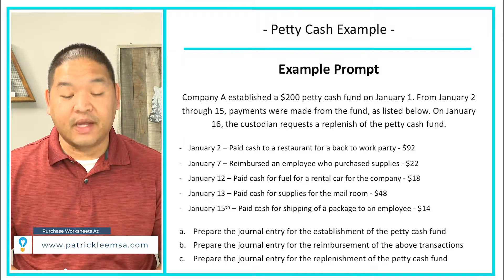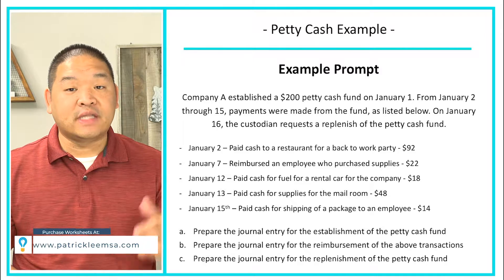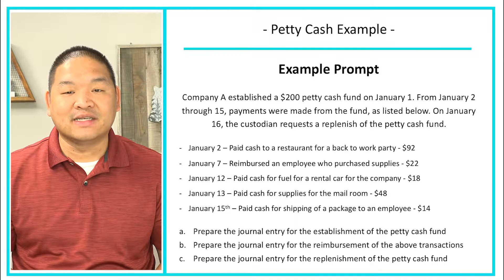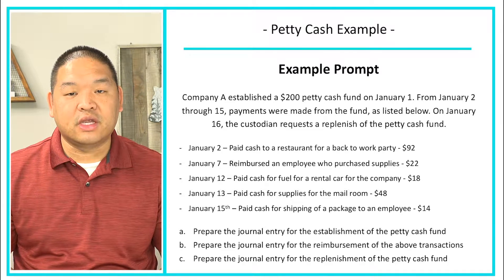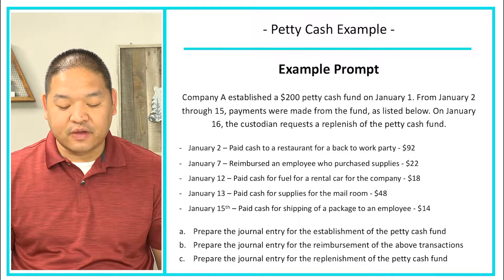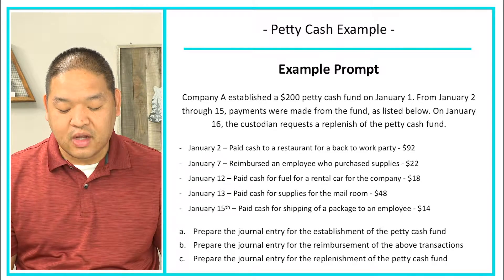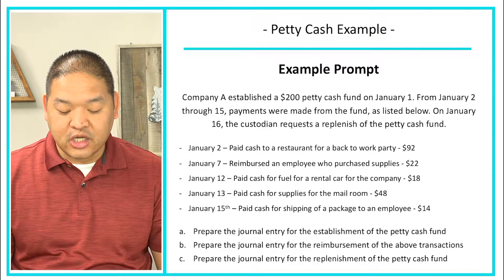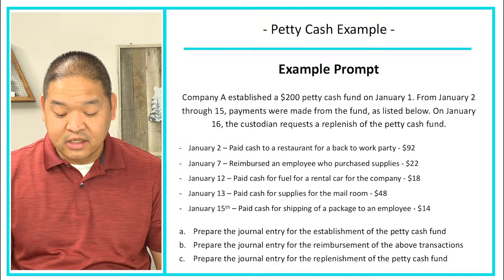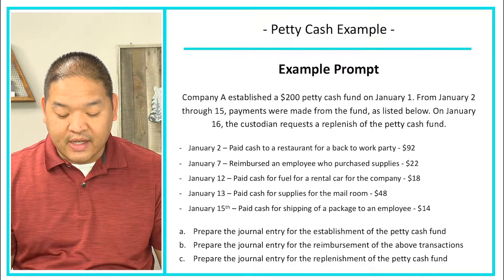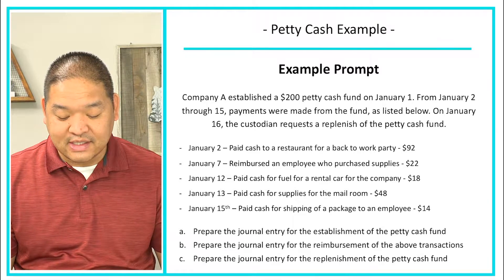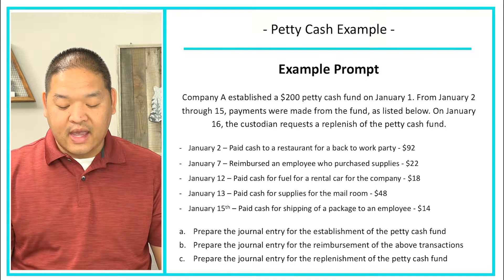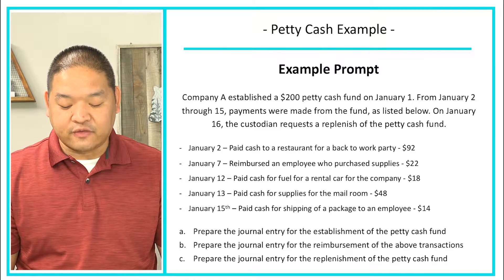Company A establishes a $200 petty cash fund on January 1st. From January 2nd through the 15th, payments were made from the fund as listed. On January 2nd, we paid cash to a restaurant for a back-to-work party costing $92. On January 7th, we reimbursed an employee who purchased supplies for $22. On January 12th, we paid cash for fuel for a rental car for $18. On January 13th, we paid cash for mailroom supplies for $48.